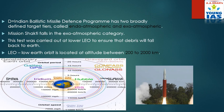Explanation: India's ballistic missile defense program has two broadly defined target tiers — endo-atmospheric and exo-atmospheric. Exo-atmospheric means outside the atmosphere; endo-atmospheric means within the atmosphere. Mission Shakti falls in the exo-atmospheric category. This test was carried out at a lower LEO — Low Earth Orbit, located at an altitude between 200 to 2000 km — to ensure that debris will fall back to Earth. In Mission Shakti, the satellite was destroyed at an altitude of 300 km, hence it is referred to as a lower LEO. Most communication and navigation satellites are located in this orbit as it provides good service at low cost.